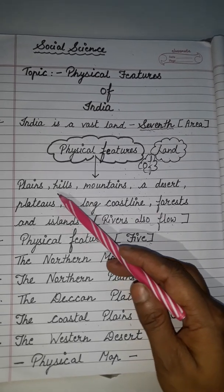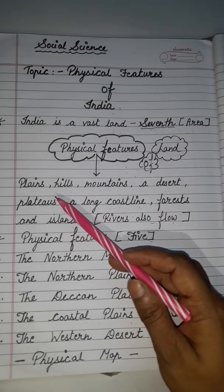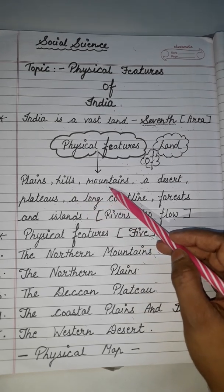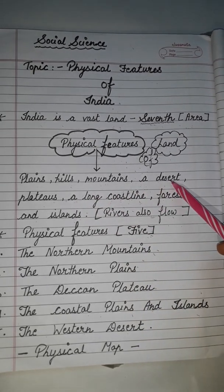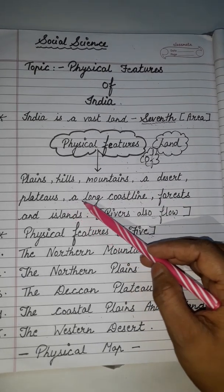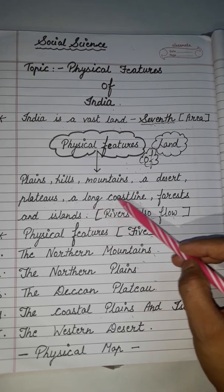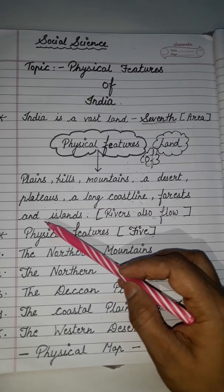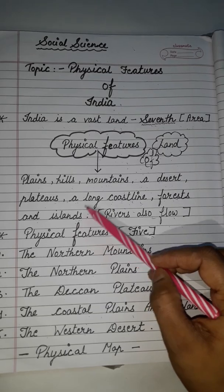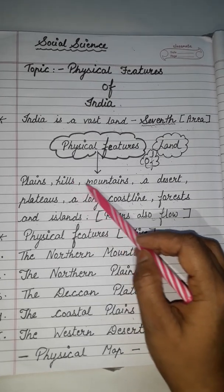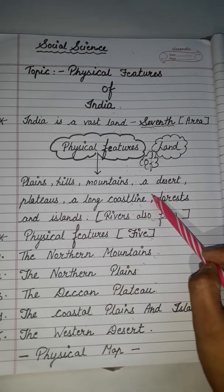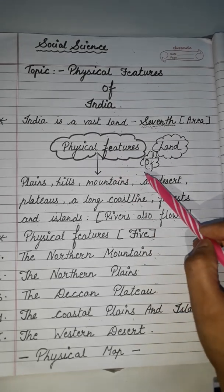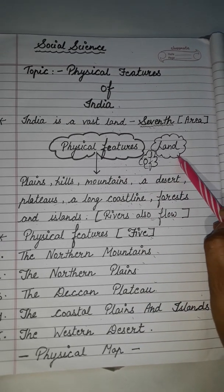There are plains, hills, mountains, a desert, plateau, a long coastline, forest and islands. All these are known as the physical features of land.